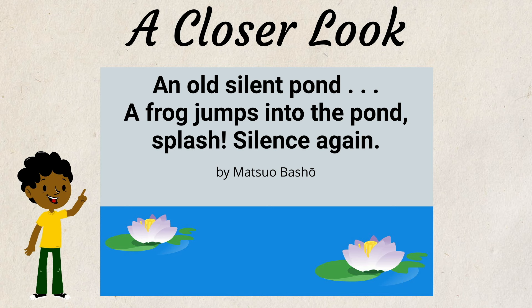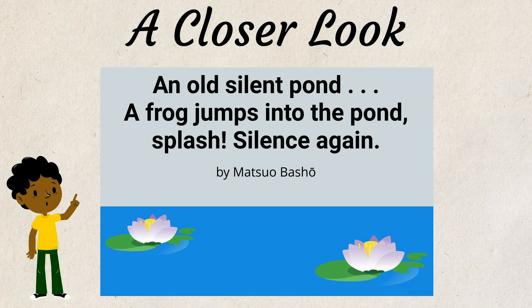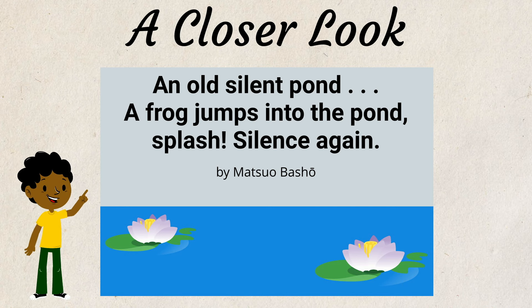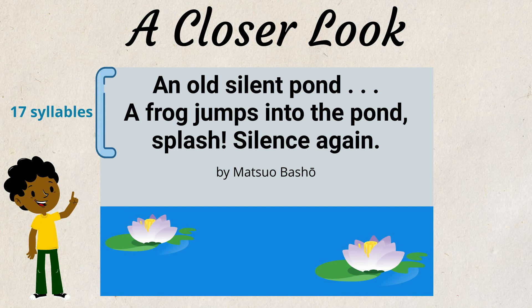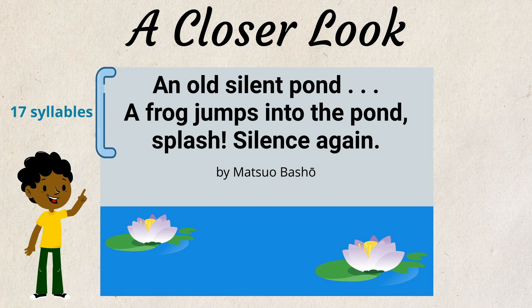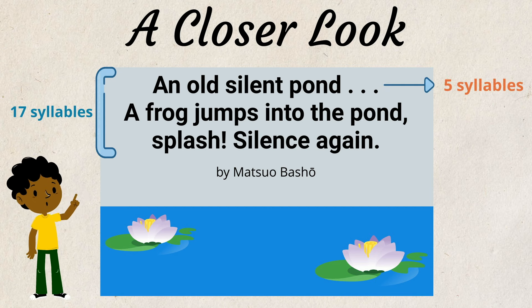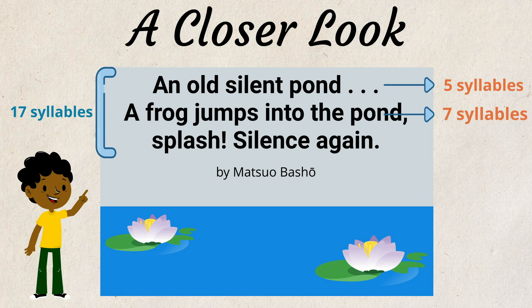Now, let's look at the structure of this poem. There are three lines with 17 syllables: five, seven, five.